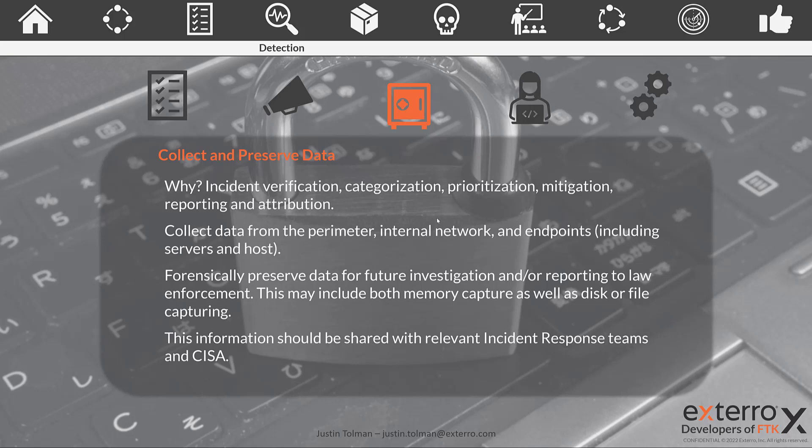You're going to collect this data from the perimeter, internal network, endpoints — including servers and hosts — and if something involves any cloud repositories, you may want to collect logs and information from those as well. You want to preserve that data in a forensic structure, an image format, something hardened against changes that can be validated through the entire analysis process. Any information you gain through this collection should be shared with the various incident response teams within your organization, and it also needs to be shared with CISA, because CISA coordinates responses for this type of attack across all FCEB agencies. Everyone benefits from the work you're doing, and you'll want that when someone else is breached and you can benefit from their work.